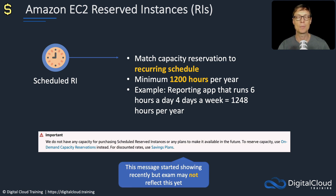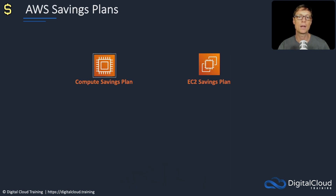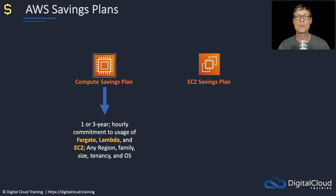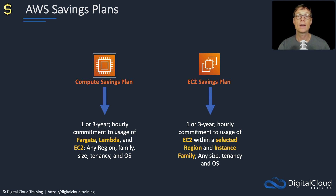Next, savings plans. There are two types: the compute savings plan and the EC2 savings plan. With the compute savings plan, you choose a one or three year hourly commitment to usage of Fargate, Lambda, and EC2 — any region, family, size, tenancy, and operating system. With the EC2 savings plan, it's also a one or three year hourly commitment, but to EC2 only within a selected region and instance family, with flexibility on size, tenancy, and operating system combination.